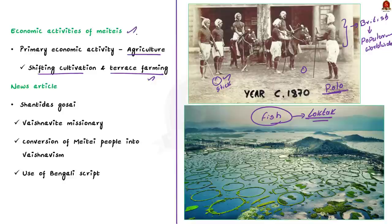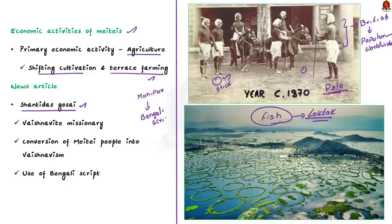The article says that the arrival of Shantidas Gosai into Manipur led to the Meitei Mayek script getting replaced by the Bengali script. Shantidas Gosai was a Vaishnavite missionary who led the conversion of Meitei people into Vaishnavism. With this, let us conclude this discussion and take up the next news article.